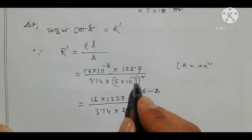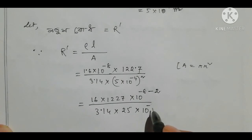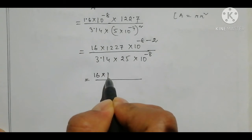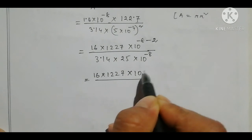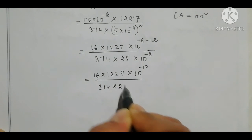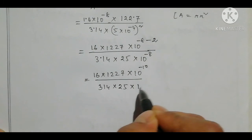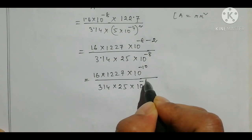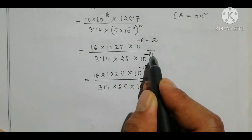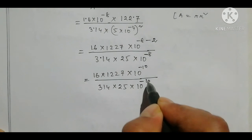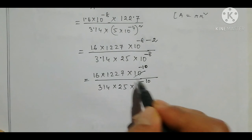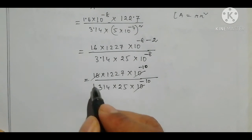This is 5 greater than 25 into 10 to the power minus 4. That means the power will be equal to 8. Here we write 122 is 10 to the power minus 10. This is 314 into 25. If I take 10 to the minus 8 and the inverse, I take minus 8 to minus 10, and then 2 to the minus 8.